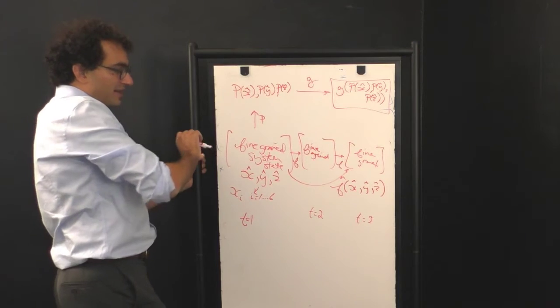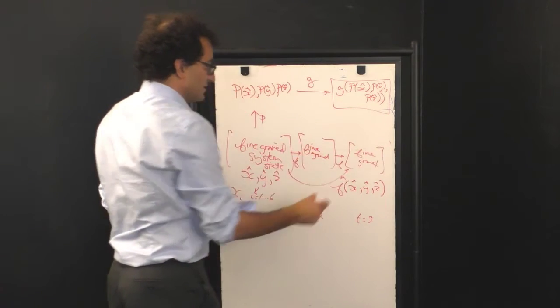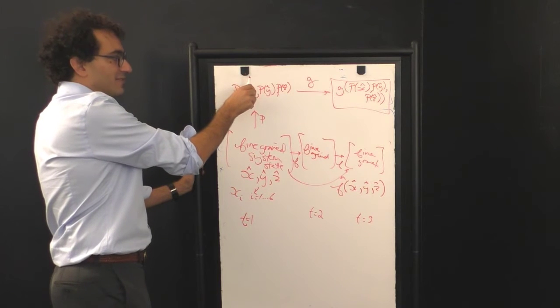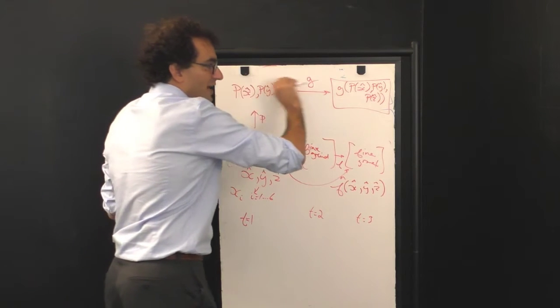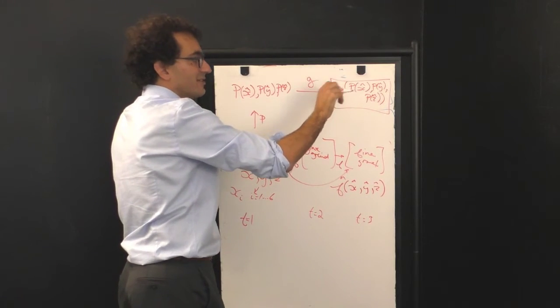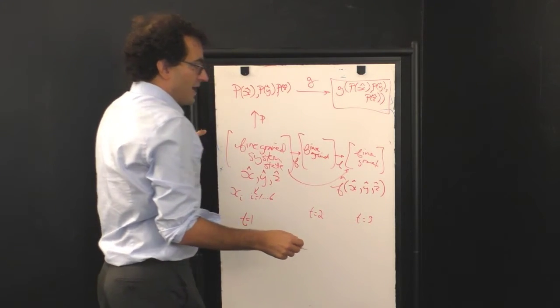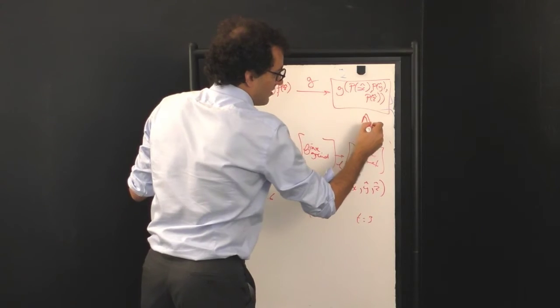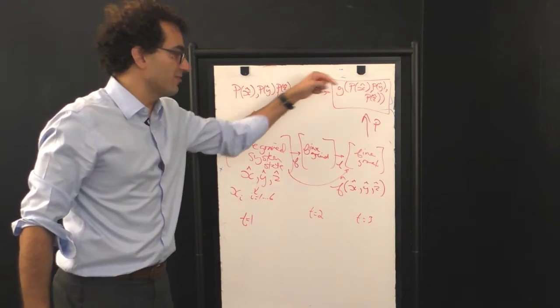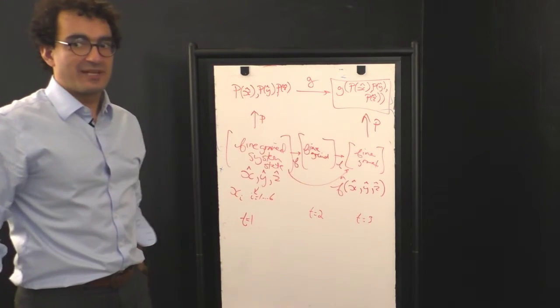And so, going along the bottom, we evolve the supercells. Going up, we project the initial configuration of the supercells. Going right up here, we evolve that projected configuration forward in time. And so now, we can compare what happens if you coarse-grained and evolve to what happens if you evolve and then coarse-grained.